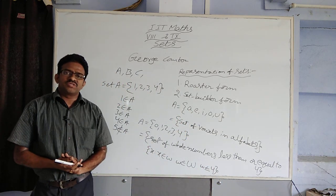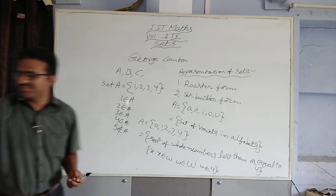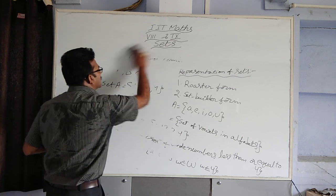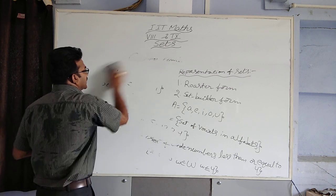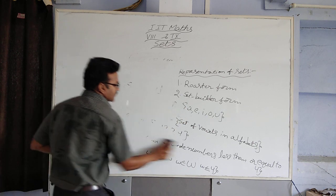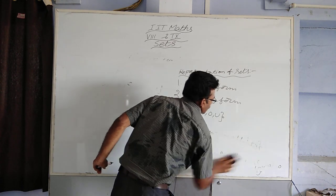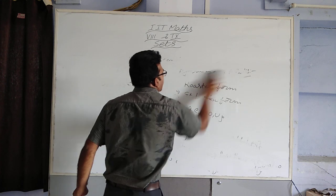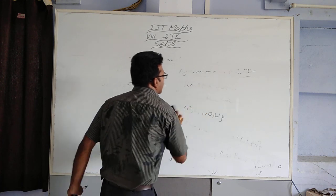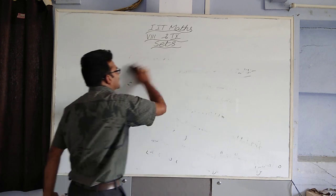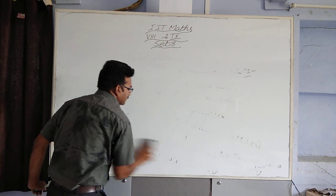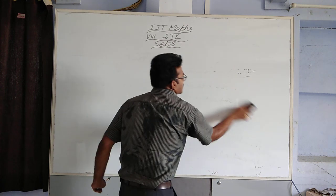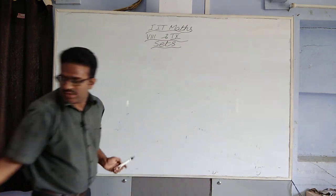Now we are going to see types of sets. The types of sets are: finite, infinite, singleton, empty, universal, subset, and power set. One by one, I am going to write and explain those. Observe here carefully.